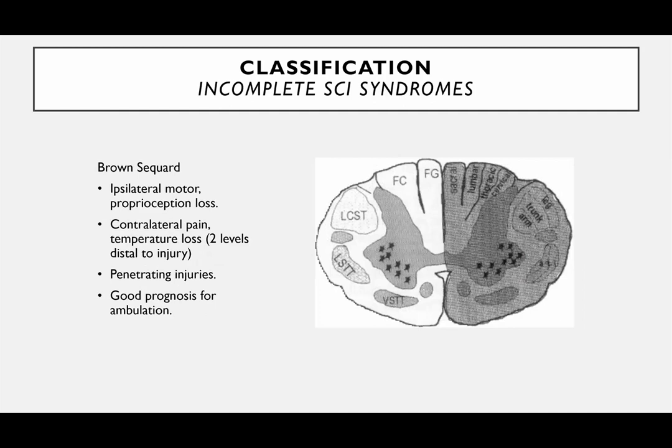Brown-Séquard syndrome is an uncommon but interesting lesion in which you have a hemi-injury of the spinal cord. It can happen from penetrating injury, and you get ipsilateral motor and some sensory loss, and then contralateral pain and temperature loss because of the nerve tracts that cross over. You get different symptoms on either side of the body — good prognosis overall.